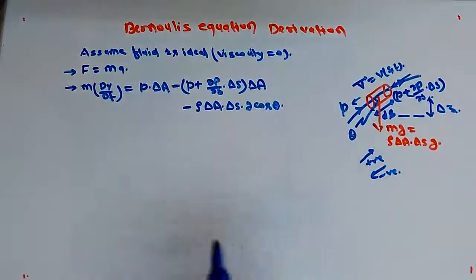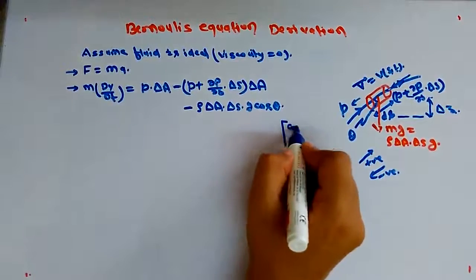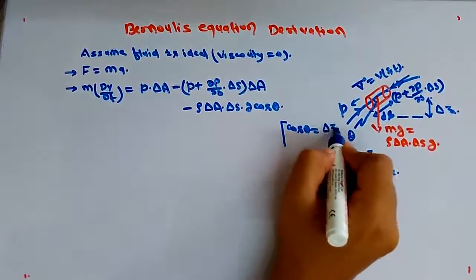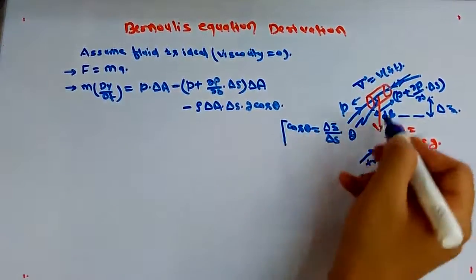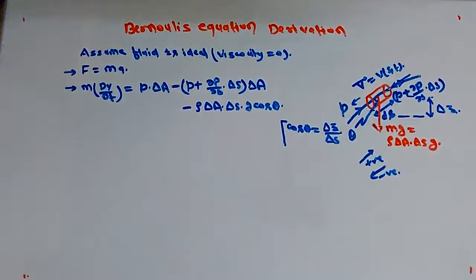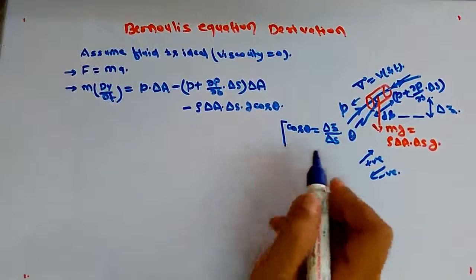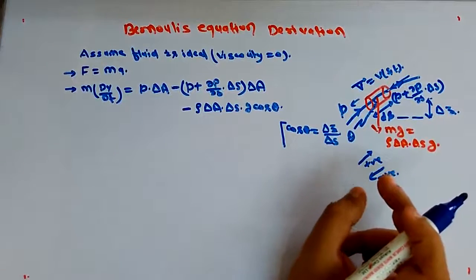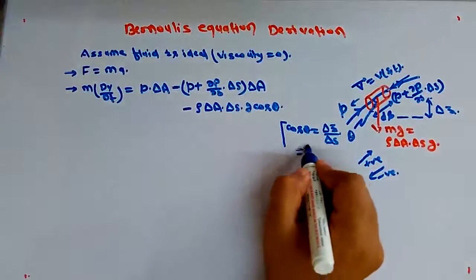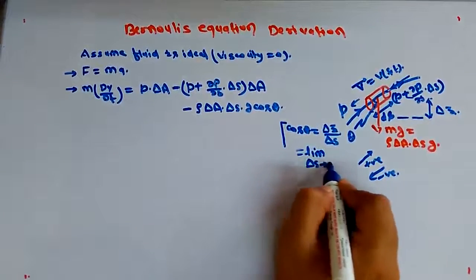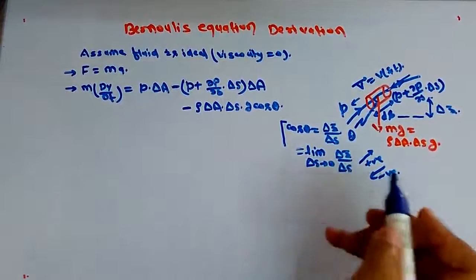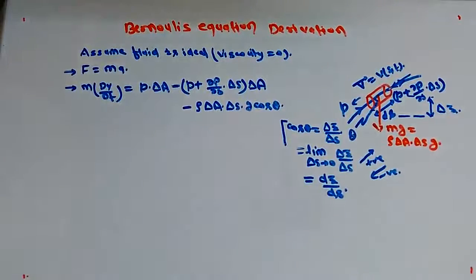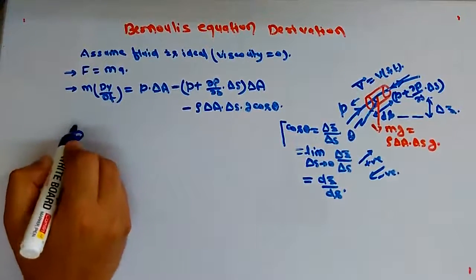We replace cos(theta) with delta_z / delta_s from the geometry of the picture. As the fluid element length becomes very small, in the limit as delta_s tends to zero, cos(theta) becomes dz/ds.